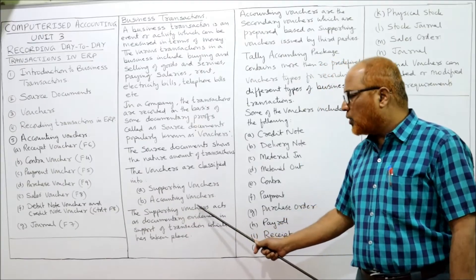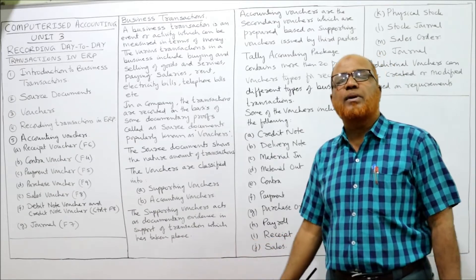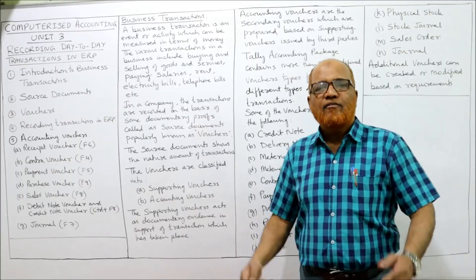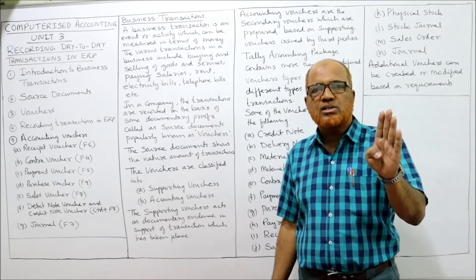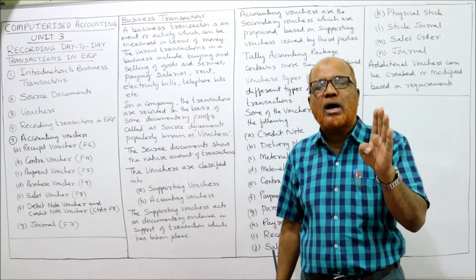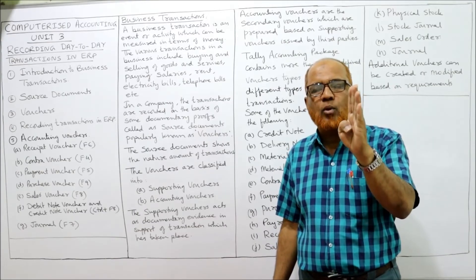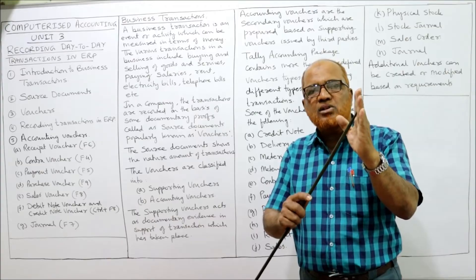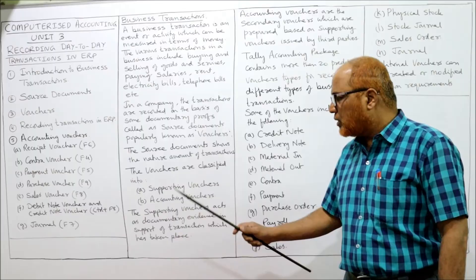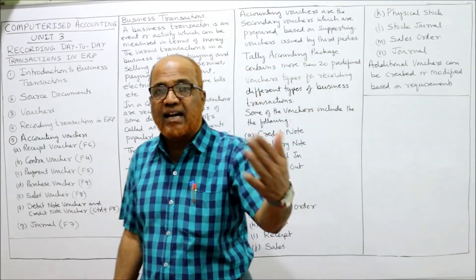Supporting vouchers are the documentary evidence in support of a transaction which has taken place. For example, when we buy goods, we get the invoice from the supplier. The supplier issues the invoice to us. That invoice is a supporting voucher; on the basis of this invoice only, the transaction will be recorded. Secondly, accounting vouchers — accounting vouchers are the supporting or secondary vouchers.